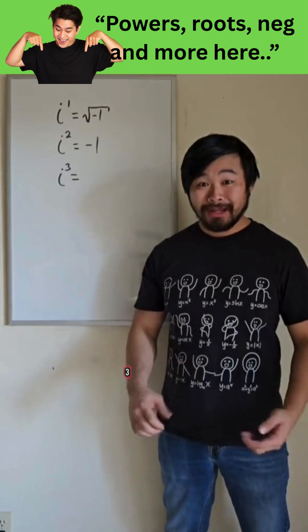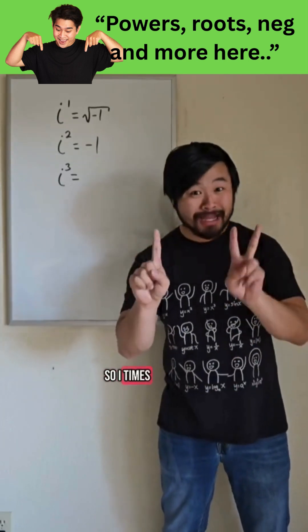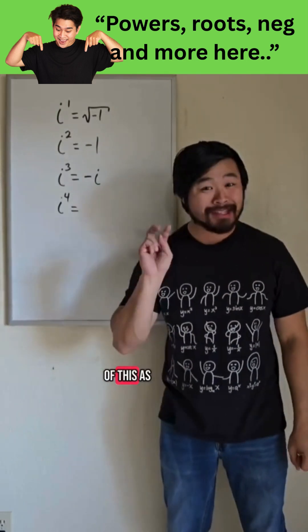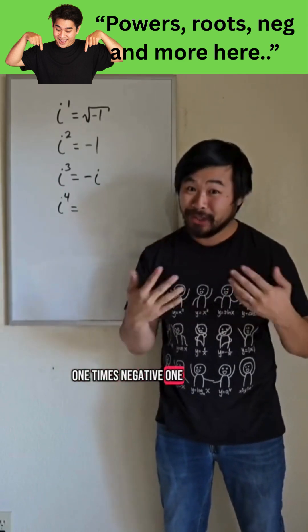Now with i cubed, well I can think of that as i times i squared, so i times negative 1, which is negative i. Now with i to the 4th, I can think of this as i squared times i squared, and that's negative 1 times negative 1, which is 1.